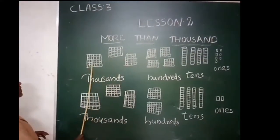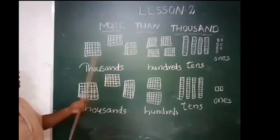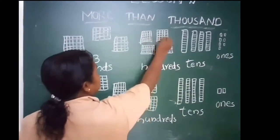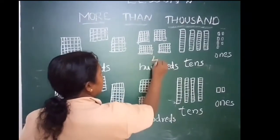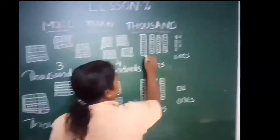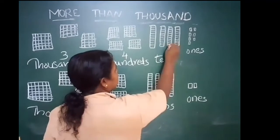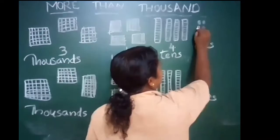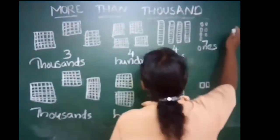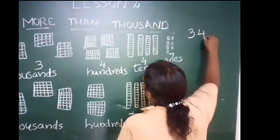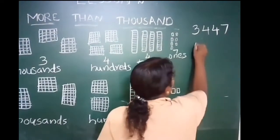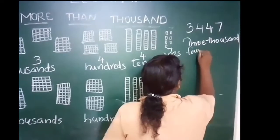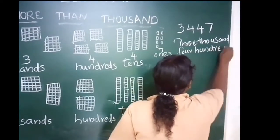Here is 1000 — this represents 1000. How many 1000s are here? You can see 3 boxes, so 3000. And 4 boxes in the place of hundreds, so 400. In the tens, you can see 1, 2, 3, 4 — so 4 tens. And the ones: 1, 2, 3, 4, 5, 6, 7. So we can write it as 3,447. The number name is three thousand, four hundred and forty-seven.